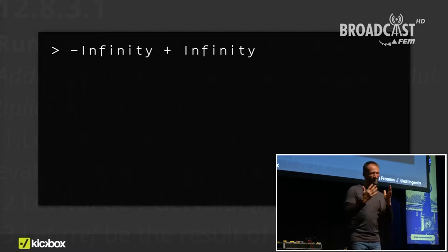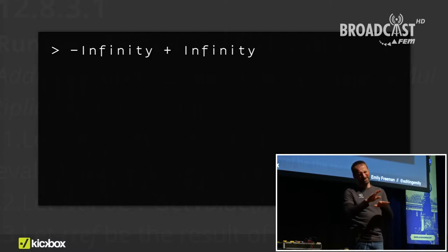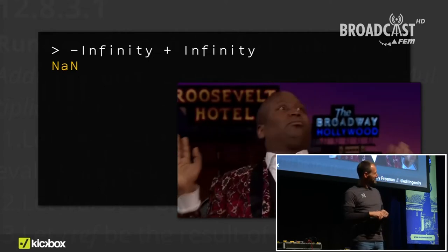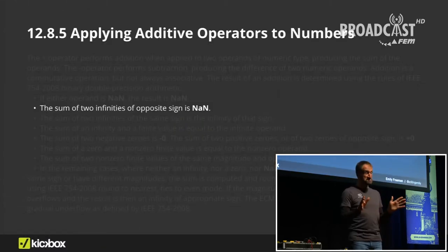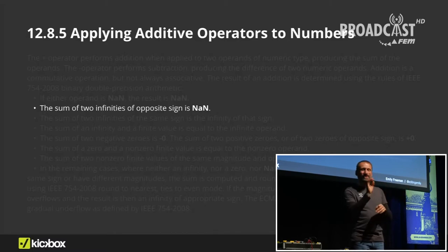Negative infinity plus infinity. I should note that if you are putting this in your code, you are a very naughty programmer and you should not do that. Someone actually bothered to write this one down — JavaScript is nothing if not well-documented. Two infinities of opposite sign is equal to not a number. And God knows JavaScript loves NaN.